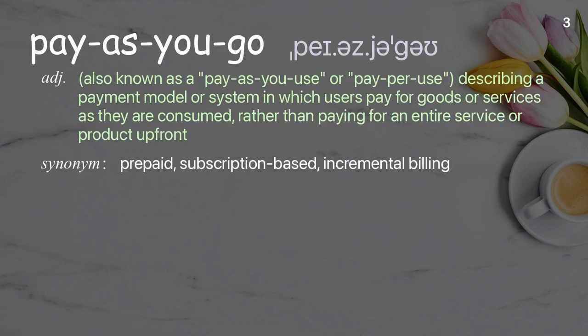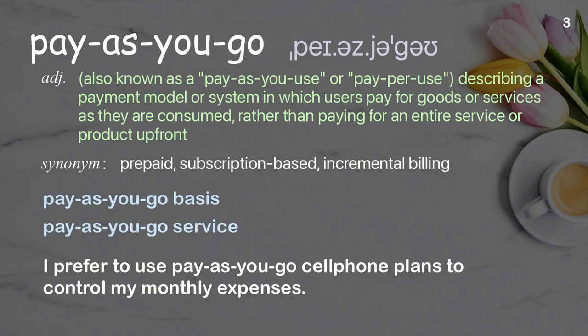Pay-as-you-go: Also known as pay-as-you-use or pay-per-use, describing a payment model or system in which users pay for goods or services as they are consumed, rather than paying for an entire service or product up front. Example: I prefer to use pay-as-you-go cell phone plans to control my monthly expenses.